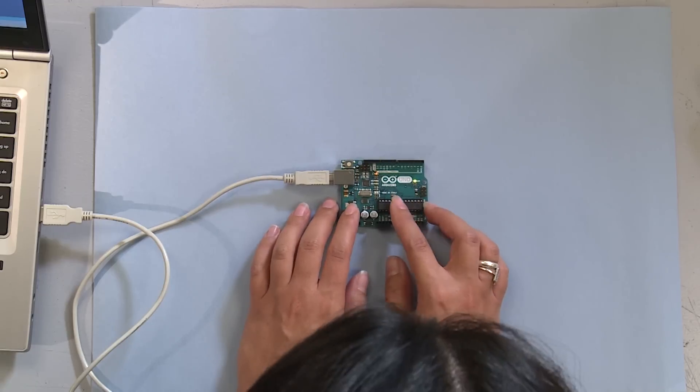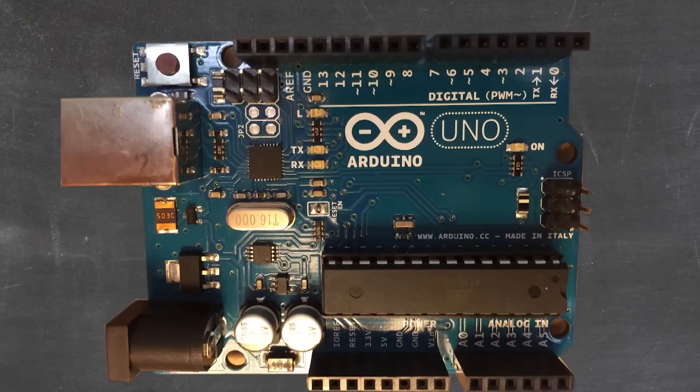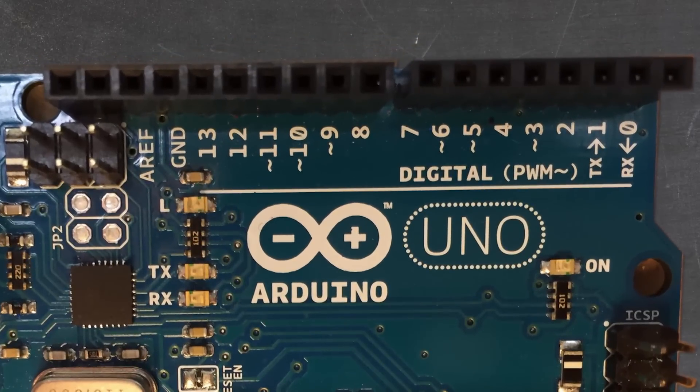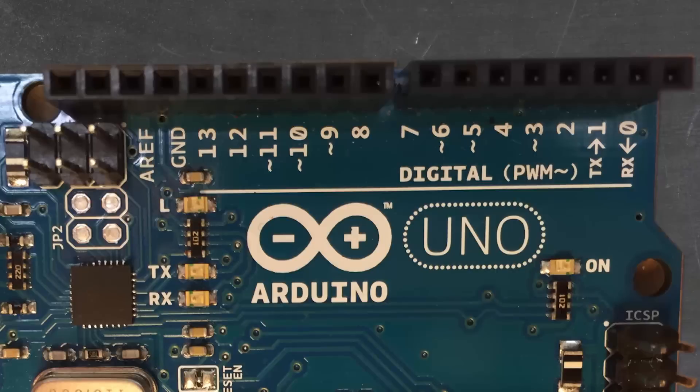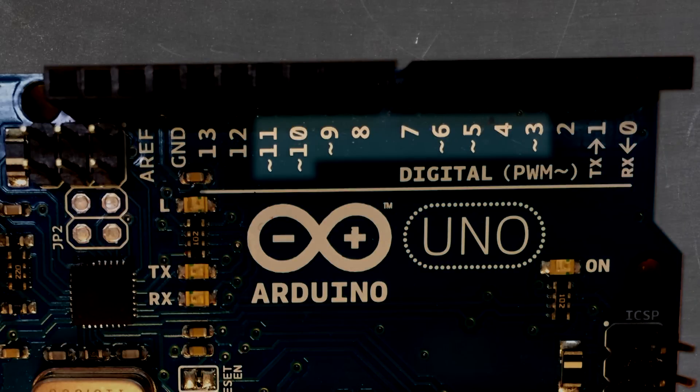First let's take a look at our Arduino. Notice on the digital side there's a parenthesis that says PWM with the squiggly line next to it. Notice there are certain numbers that have that squiggly line - 3, 5, 6, 9, 10, and 11.